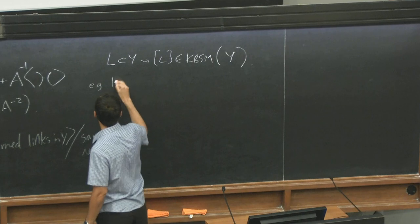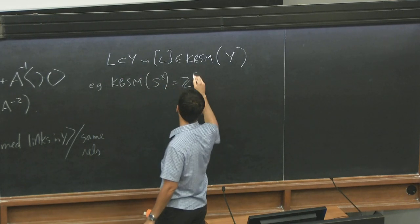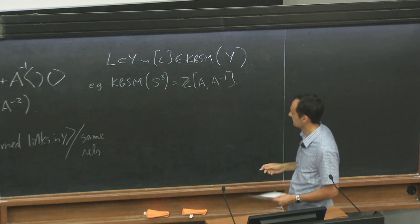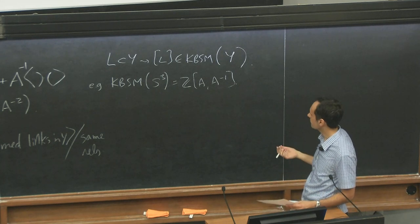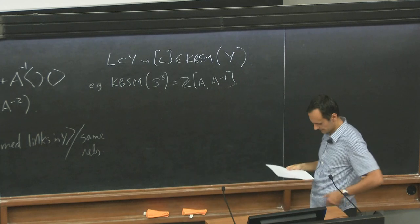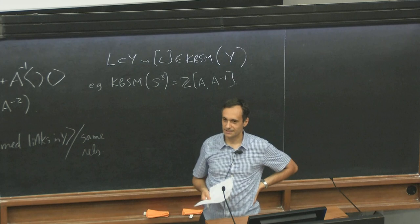So for example, for S3, it's just Z A A inverse. And that's why the Jones polynomial is a Laurent polynomial. But in general, where does your invariant live? It lives in this skein module, which is easy to define, but things that are easy to define are hard to compute.